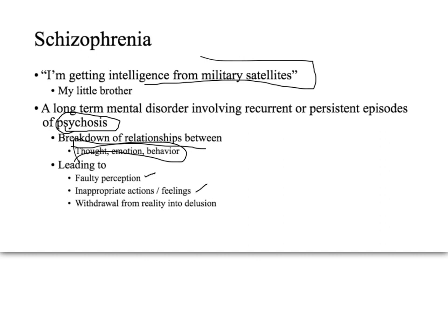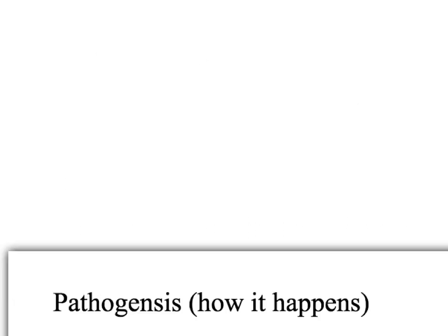There are two subcategories of schizophrenia — one of them is not recognized by the DSM-5, but there is significant research indicating it is a real subcategory. In the past, categories such as paranoid schizophrenia existed but were removed from the DSM-5 for lack of evidence. Some important evidence-based categories have not yet been added, and we'll discuss those as well.